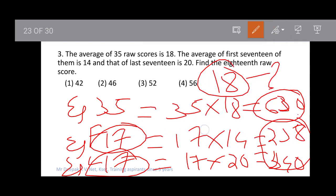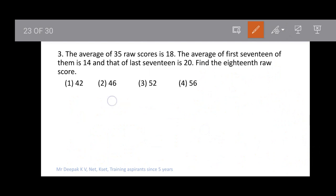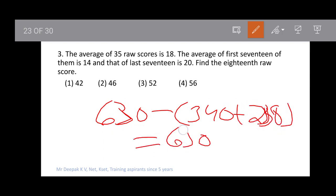The answer is 630 - (340 + 238) = 630 - 578 = 52. Option 3 is our answer.